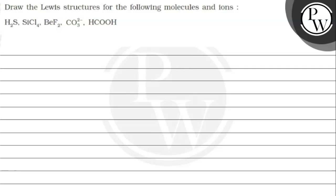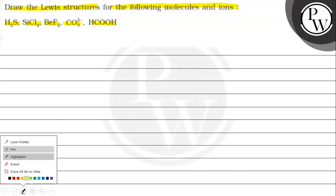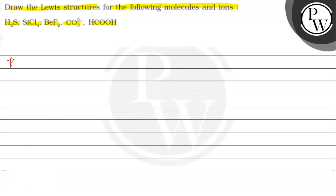Let's read this question. The question says: draw the Lewis structures for the following molecules and ions — H₂S, F₂, carbonate ion, and formic acid. The concept for this question will be Lewis structures.